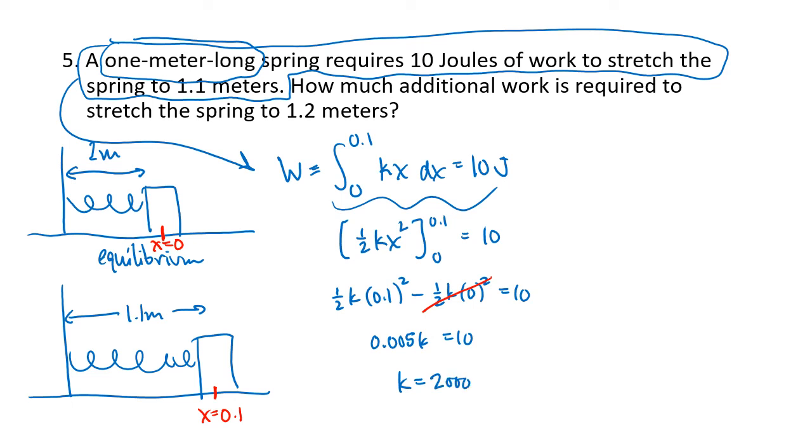So that's how we figured out k using that first sentence. Now the question is, how much additional work is required to stretch the spring to 1.2 meters? So that would be the work to take us from x equals 0.1 to x equals 0.2. We're already at x equals 0.1. We want to go another 0.1 unit to the right. We want to go to x equals 0.2. So how much work will that take?